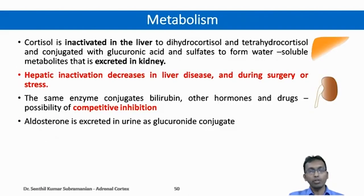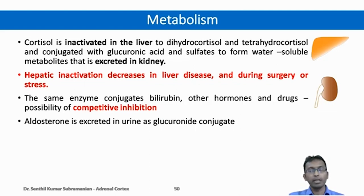Cortisol is mainly inactivated in the liver and conjugated with glucuronic acid and sulfates to form water-soluble metabolites that are easily excreted through the kidney. In case of liver disease, during surgery, or stress, the function of the liver comes down. If liver function decreases, hepatic inactivation of cortisol decreases and the cortisol level automatically increases. This must be noted in case of liver disease, surgery, or any form of stress.